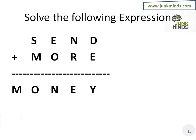We will try and understand this with the help of a problem. The expression which I need to encrypt is SEND plus MORE, and it should translate into MONEY. The idea here is for each of these letters I need to assign a value from between 0 and 9, such that when I actually add up these values it should add up to this. The values have to be from 0 to 9 and every letter should have a unique value — you cannot have two letters having the same value.